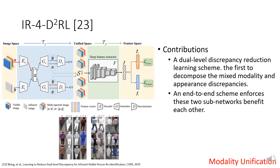The fourth work is our work in CVPR 2019. We try to unify the modality. The framework has two parts: the image-level discrepancy reduction subnetwork TI, which first projects input from visible image space to a unified space, reducing modality discrepancy and producing four-channel images after translation; and the feature-level discrepancy reduction subnetwork TF, which eliminates the remaining appearance discrepancy. The two subnetworks are cascaded and jointly optimized in an end-to-end manner.